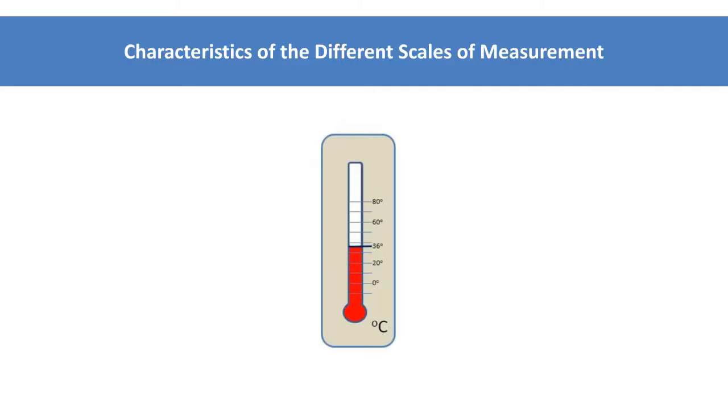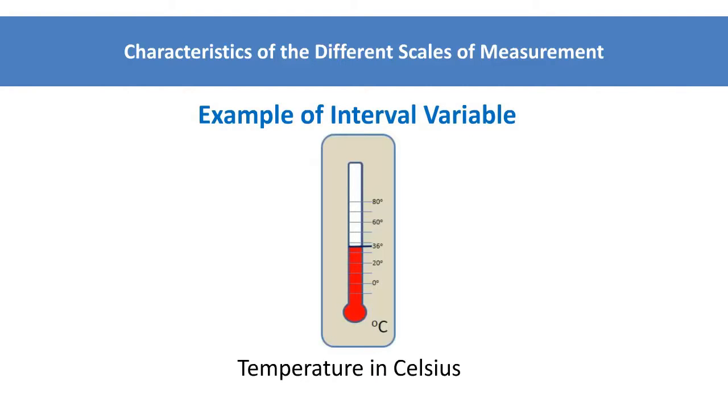For instance, when temperature is measured in Celsius, the one degree difference, say between 35 degrees and 36 degrees, is assumed to be the same as one degree difference between 25 degrees and 26 degrees. However, zero degrees in Celsius does not mean the absence of heat since there are below freezing temperatures, such as 20 below.